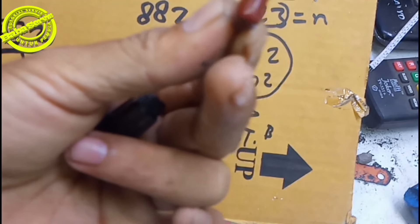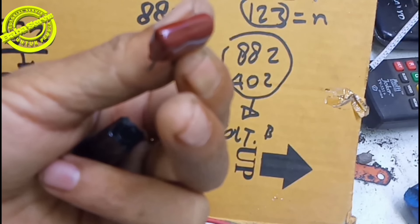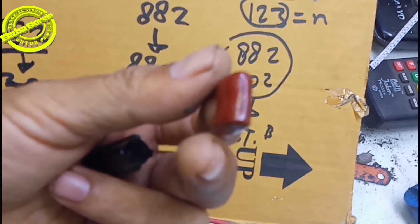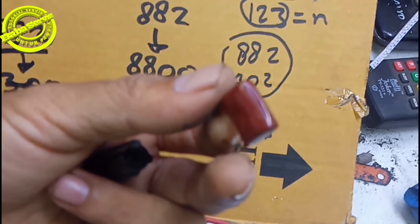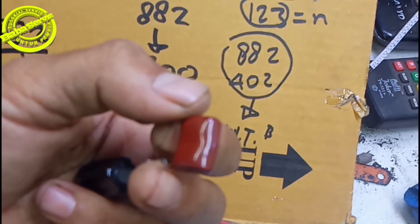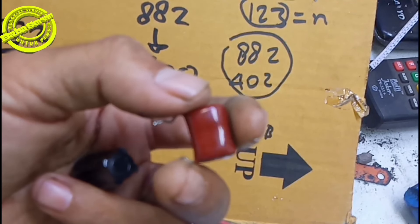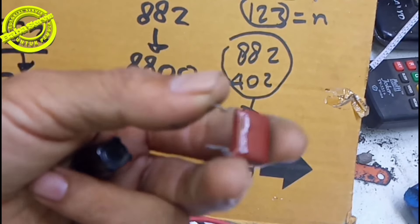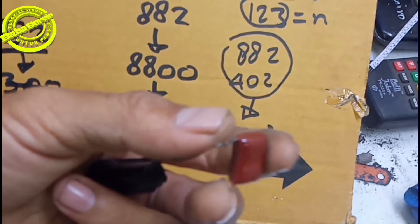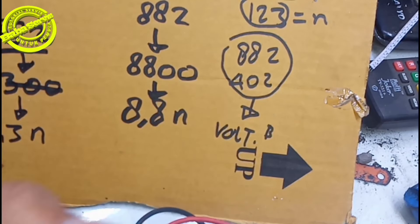Seandainya ada tulisan '2KP', berapa itu? 1 KP adalah 1.000 Volt, berarti 2 KP adalah 2.000 Volt. Bang, 1,5 KP berapa? Berarti 1.500 Volt. Jadi kalau sudah masuk Kilo, itu berarti sudah masuk angka ribuan.